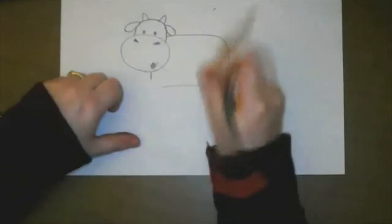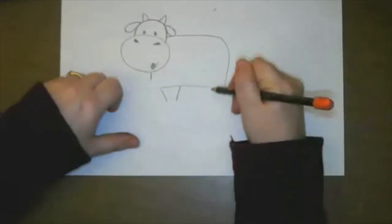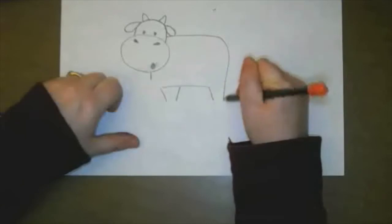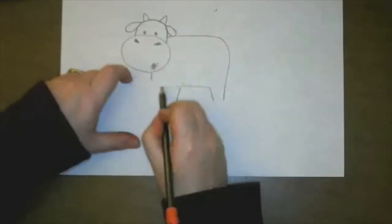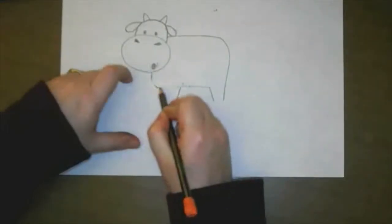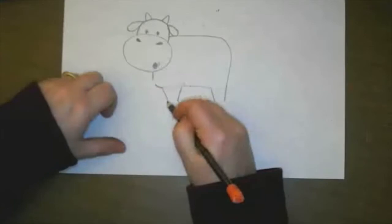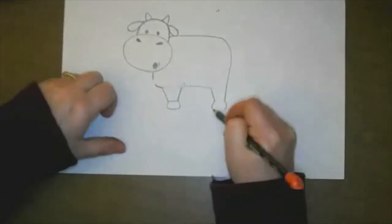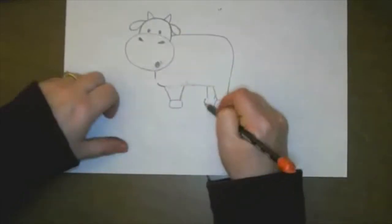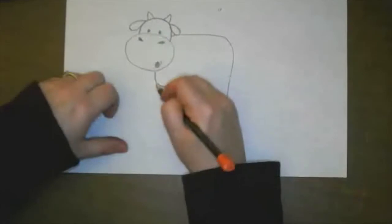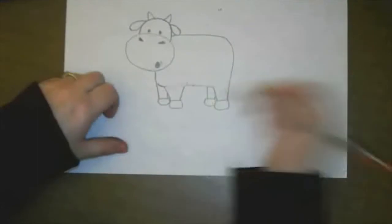I'm going to draw a couple of legs there. I'm going to go ahead and bring a line around right here. And I'm going to draw some feet. Okay. And then I'm going to draw another foot back in here. We've got a cow.